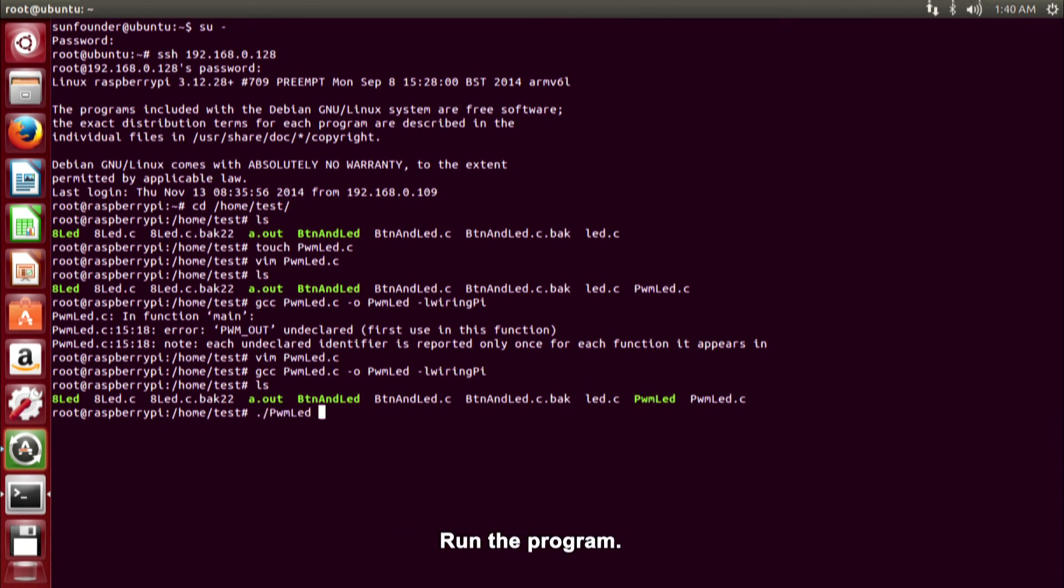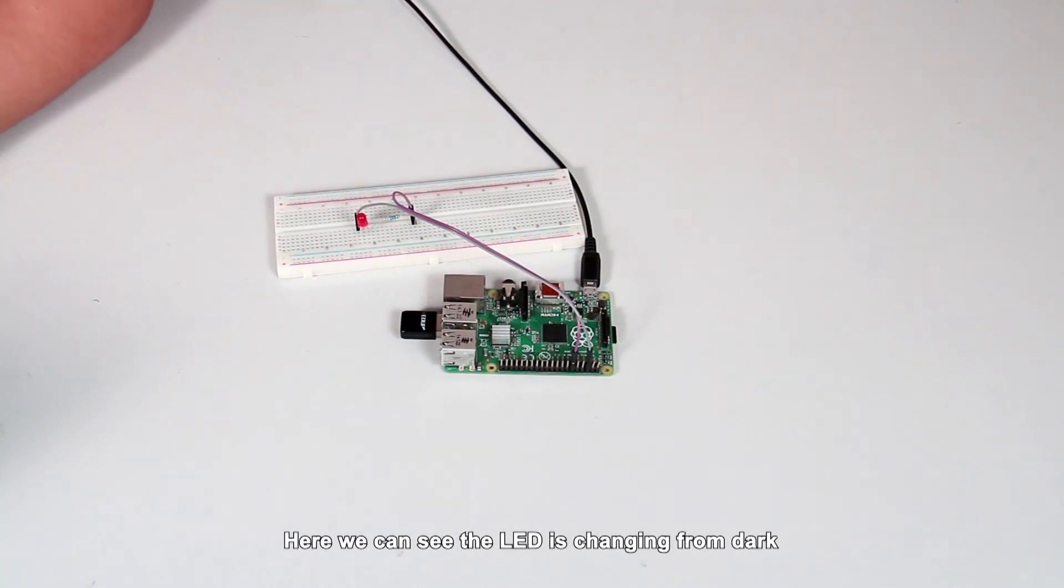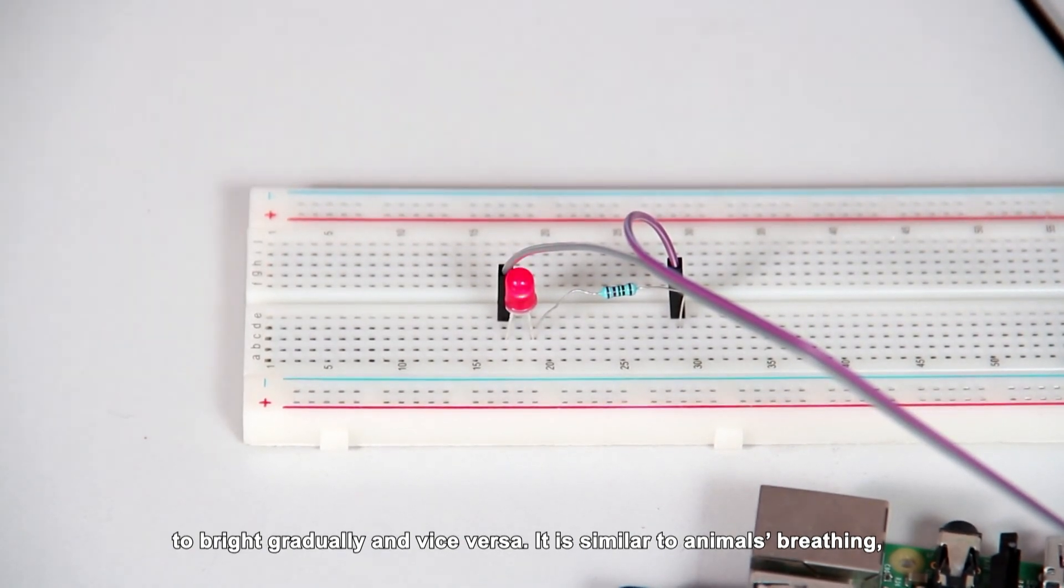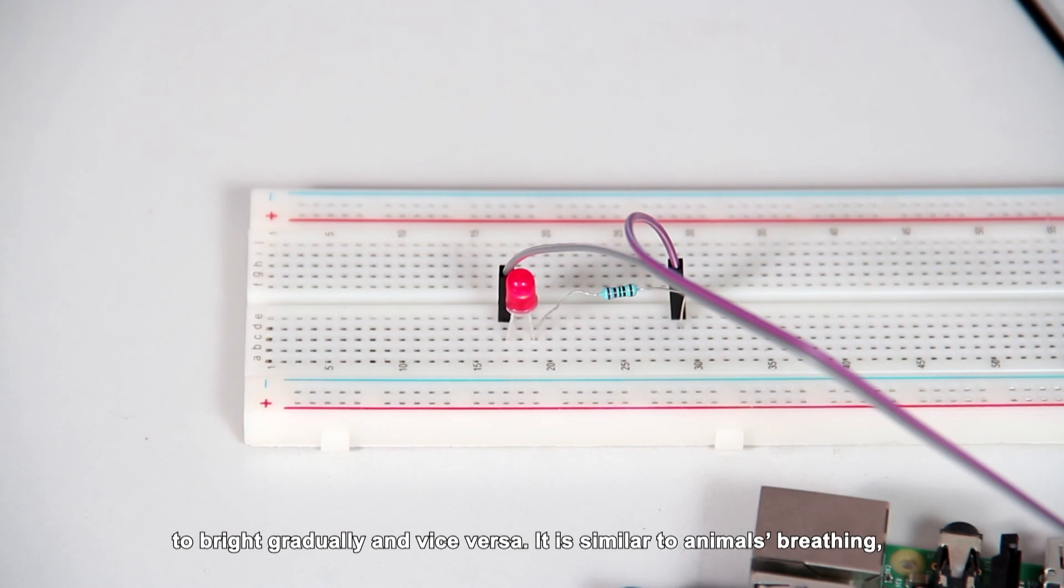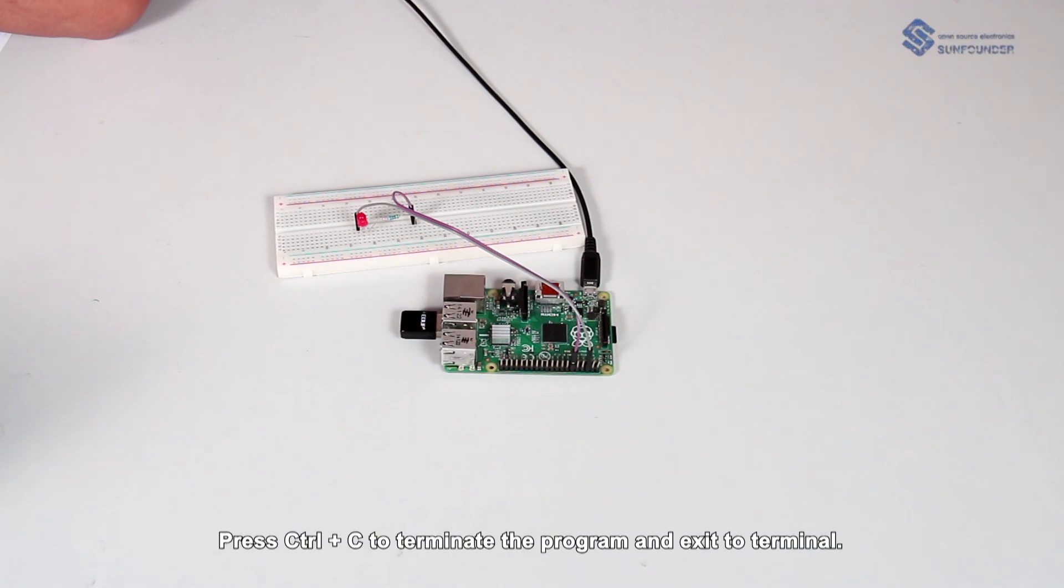Run the program. Here we can see the LED is changing from dark to bright gradually and vice versa. It's similar to human breathing. So we name it as breathing light. Press Ctrl and C to terminate the program and exit to terminal.